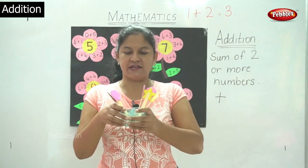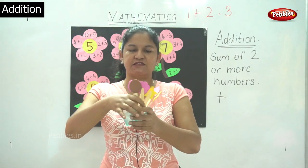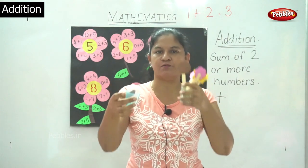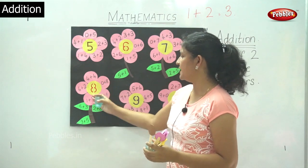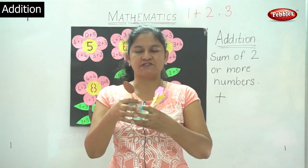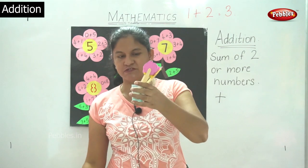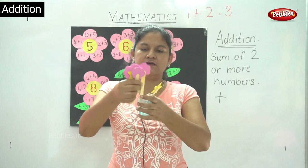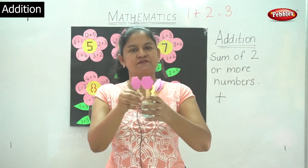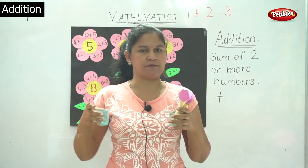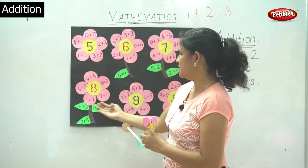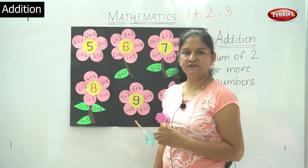Now I am placing all the ice creams — that is 4 plus 4 — so I am having 8 ice creams in this cup. So 8 plus 0 gives me 8 or 0 plus 8 gives me 8. Now I am taking 1 from this cup and placing it in the other cup, so I have 7 ice creams in one cup and 1 in the other. So 1 plus 7 gives me 8 or 7 plus 1 gives me 8.